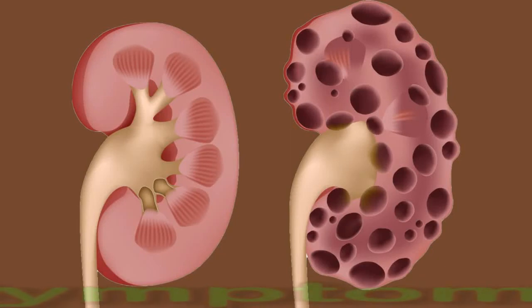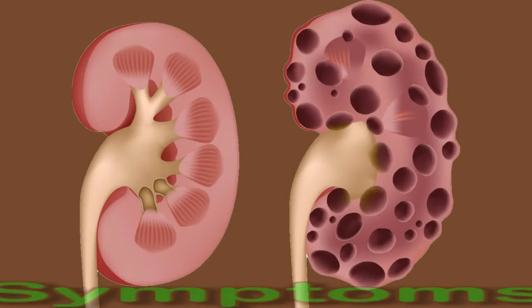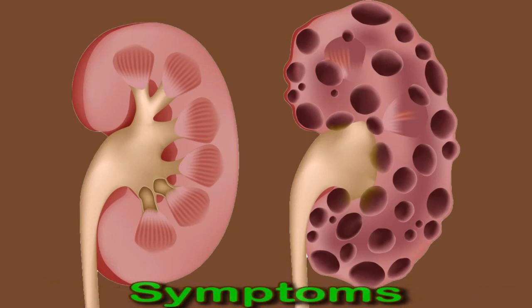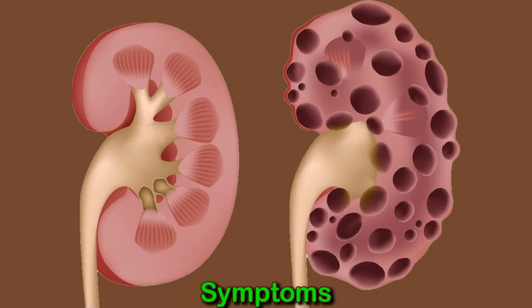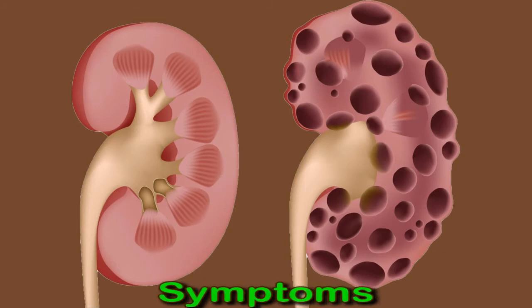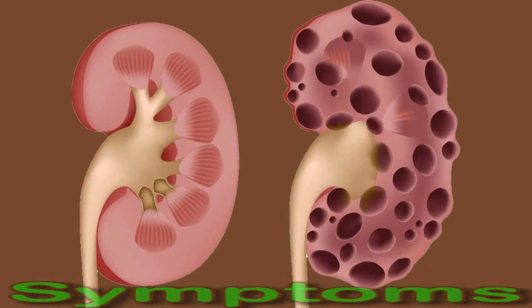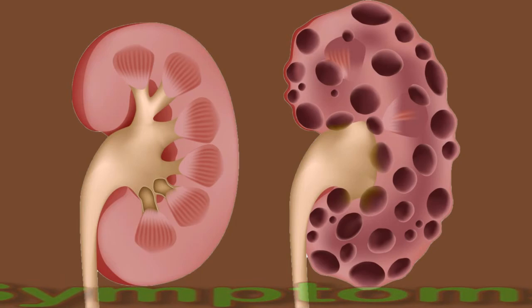Most simple kidney cysts are asymptomatic, meaning they do not cause any symptoms. However, if a kidney cyst grows large enough, it may cause symptoms that become noticeable. These symptoms can include dull pain in the back or side, pain in the upper abdomen or hips, fever if the cyst becomes infected, blood in the urine, and a need to urinate frequently. Symptoms may intensify if a complication occurs, such as an infection or a rupture.